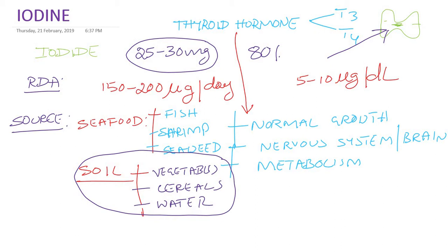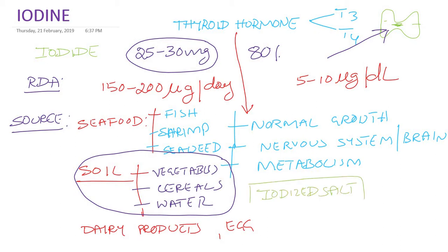Another source is dairy products and eggs. An important source of iodine nowadays is iodized salt — a commercially available salt fortified with iodine, using potassium iodide or potassium iodate. WHO recommends that about 20 to 40 milligrams of iodine should be fortified per kilogram of salt.